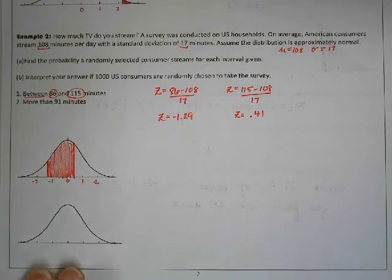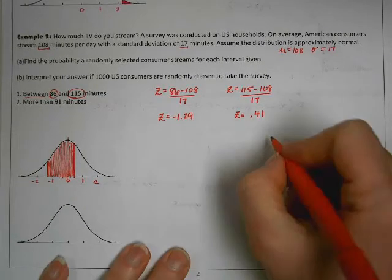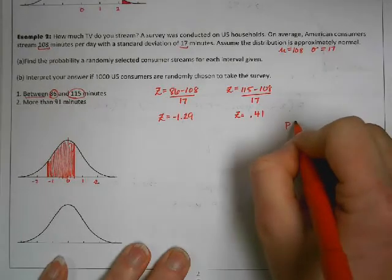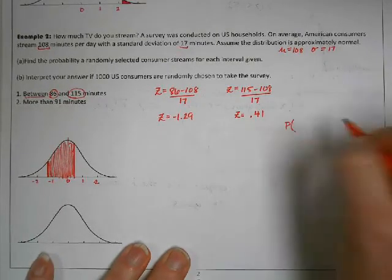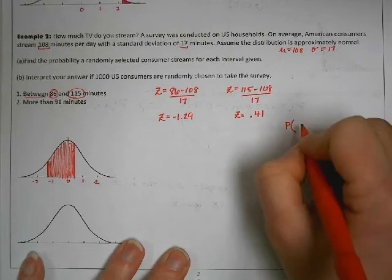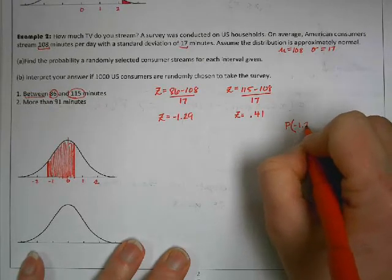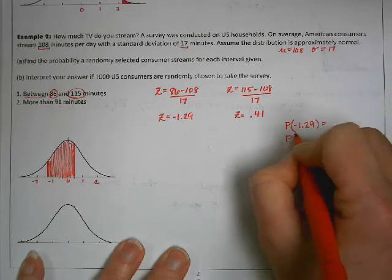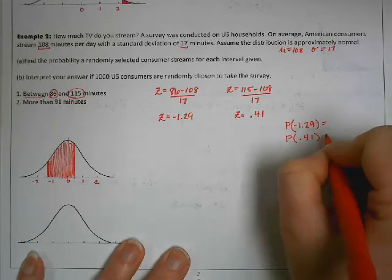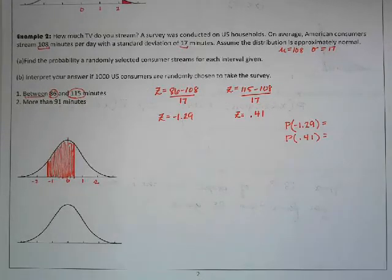I'm going to write these steps out just so you can see it. I'm going to get the probability of negative 1.29 and the probability of 0.41, either from the calculator or off your Z table. It doesn't matter where you get them.